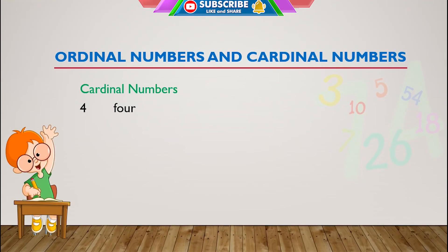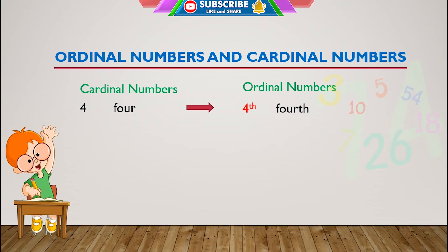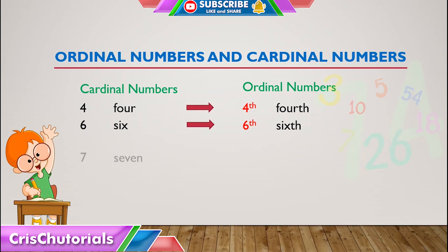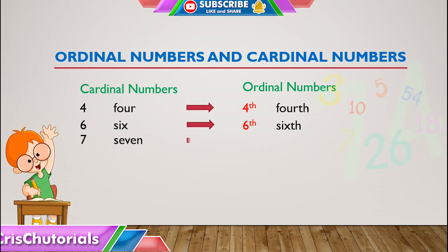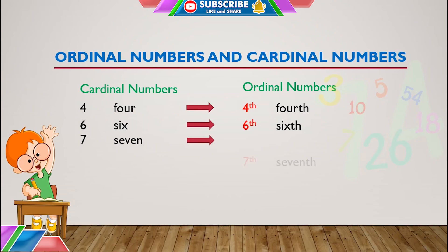We normally add '-th' to the end of a cardinal number to make an ordinal number, like 4 becomes fourth, 6 becomes sixth, and 7 becomes seventh.